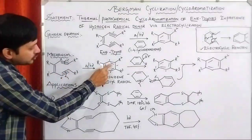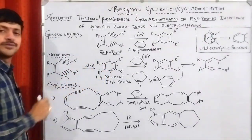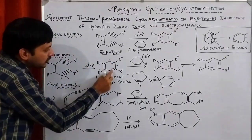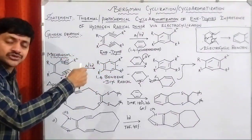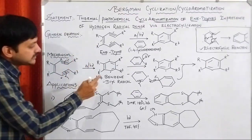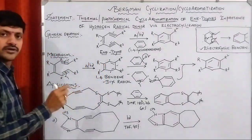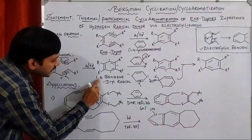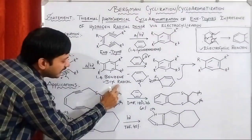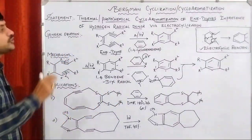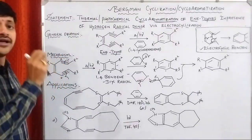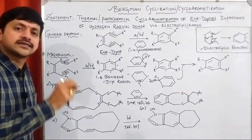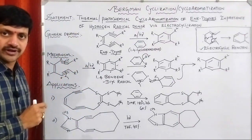The triple bonds are converted into double bonds, and at this six-membered ring we have two radicals — it is a substituted benzene intermediate. The distance is 1, 2, 3, 4 — there are 4 carbons distance — that is why it is called the 1,4-benzene diyl radical. So during this mechanism we observe 1,4-biradicals, which are the intermediates in the Bergman cyclization reaction.